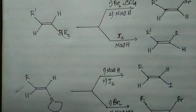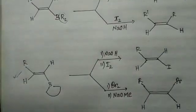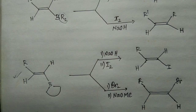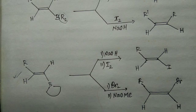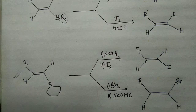Depending on whether NaOH or halogen is added first, and whether iodine or bromine is used, the reaction outcome differs. In the first set of reactions we get two specific products, and in the second set we get two other products. I hope you understood the concept behind these four problems. Thank you for watching.